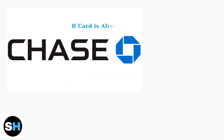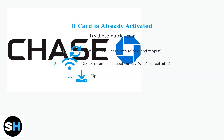If your card is already activated but still not showing, try these quick fixes: refresh the Chase app by closing and reopening it, check your internet connection by switching between Wi-Fi and cellular data, and update the Chase app to the latest version.